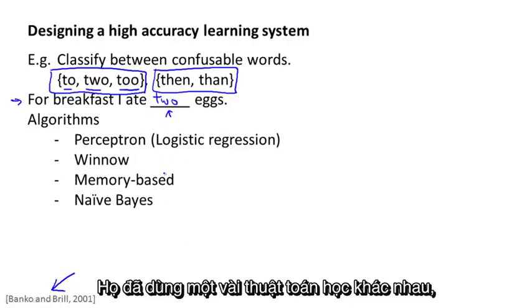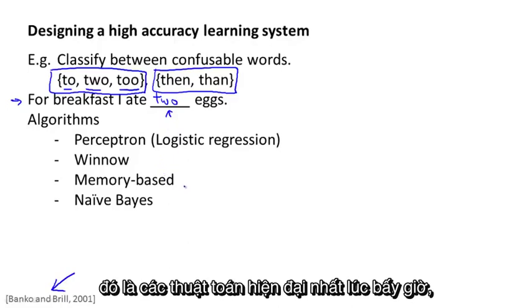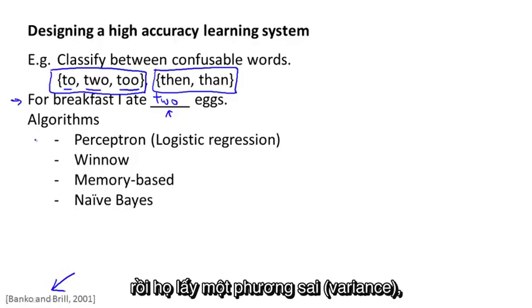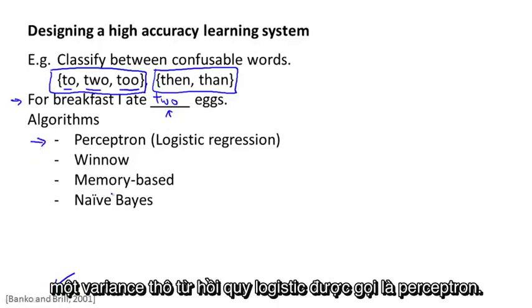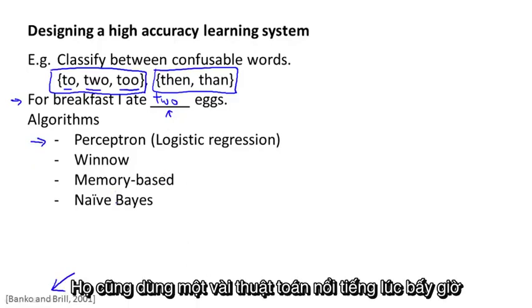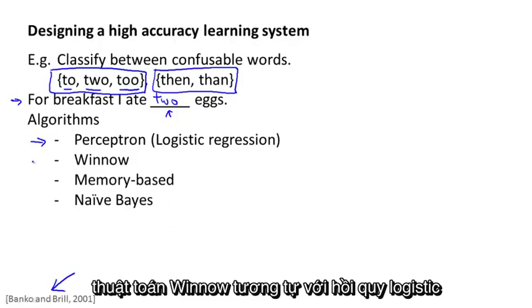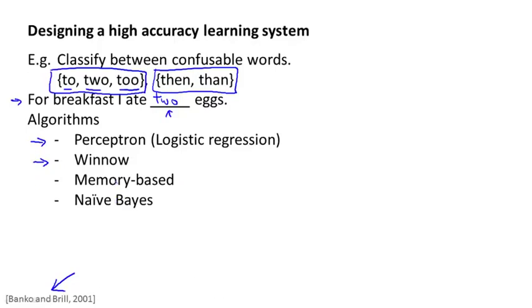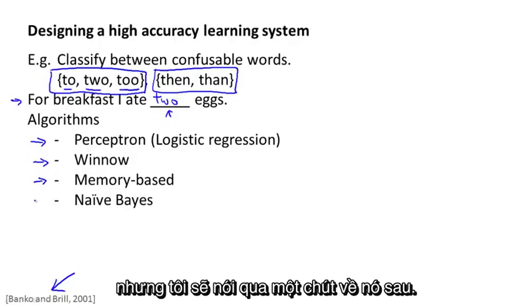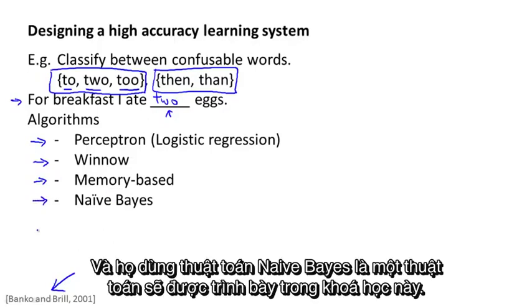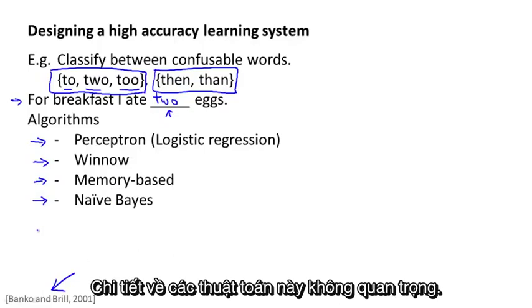They took a few different learning algorithms which were considered state-of-the-art back in the day when they ran this study in 2001. So they took a variance, roughly a variance on logistic regression called a perceptron. They also took some of their algorithms that were state-of-the-art back then but are somewhat less used now. So the Winnow algorithm, also very similar to logistic regression but different in some ways. They took what's called the memory-based learning algorithm, again used somewhat less now. And they used the naive Bayes algorithm, which is something that I'll actually talk about in this course.